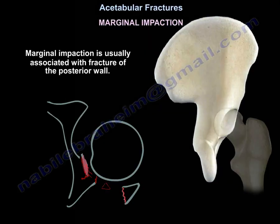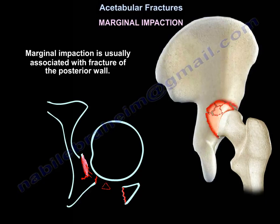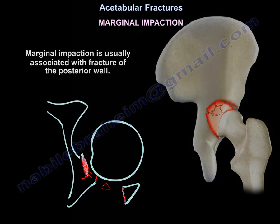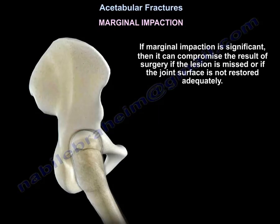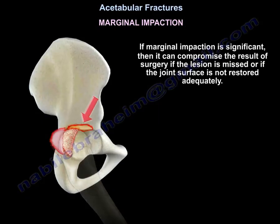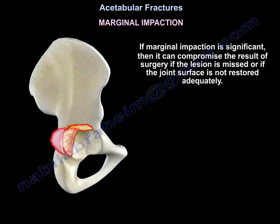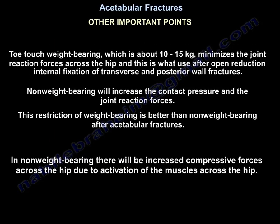Marginal impaction is usually associated with posterior wall fracture. If significant, it can compromise the surgical result if the lesion is missed or the joint surface is not adequately restored. Toe-touch weight bearing, approximately 10 to 15 kilograms, minimizes joint reaction forces across the hip, and this is what is used after open reduction internal fixation of transverse and posterior wall fractures.